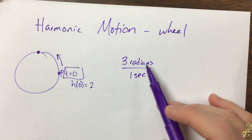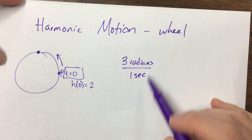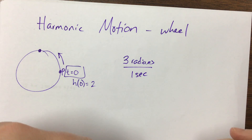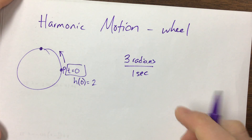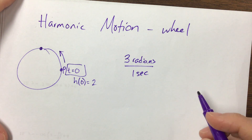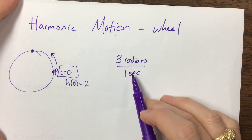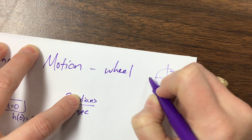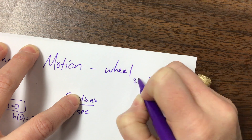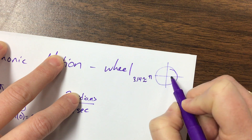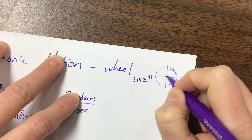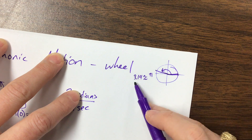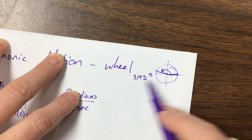They told us it travels 3 radians per second. In class I asked where is 3 radians, and some people said it's 1 and a half times around the circle, but someone correctly said nope, it's just smaller than pi. Pi is over here, which is about 3.14, so 3 radians would start here and take you to somewhere like that — just a little bit less than pi radians.